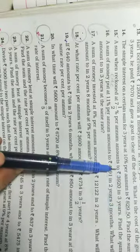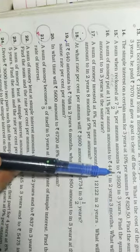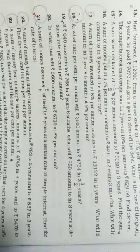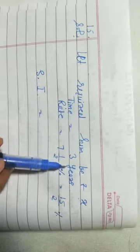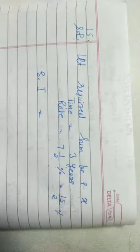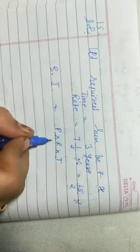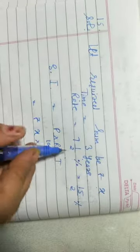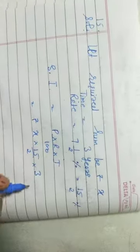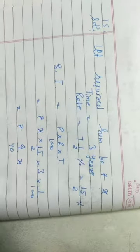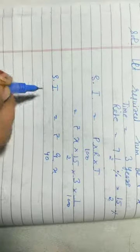Since in this question we have amount, let us let the required sum be rupees x. Time is 3 years, rate is 7.5% = 15/2%. SI = PRT/100 = (x × 15/2 × 3) / 100, which gives SI = 9/40 × x.